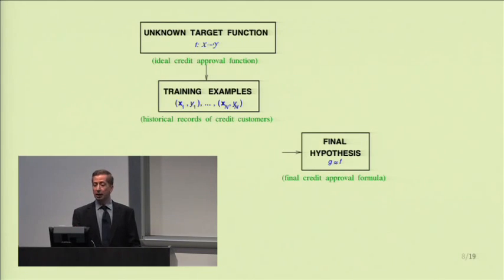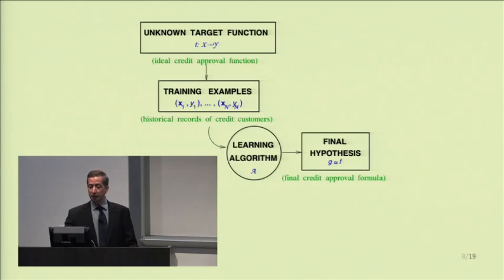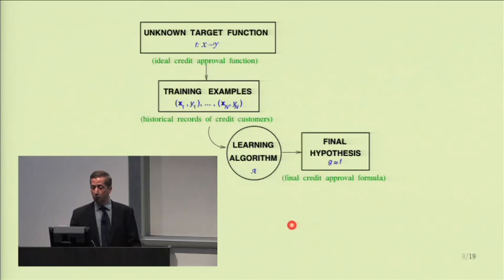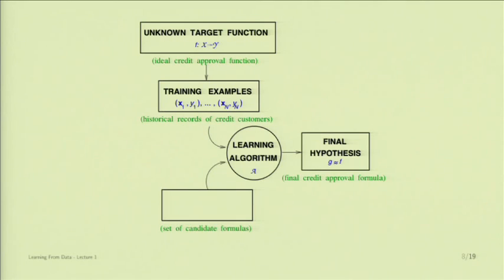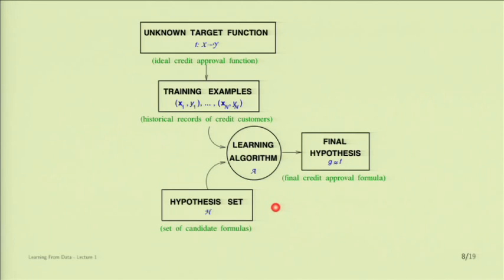What connects those two is the learning algorithm. The learning algorithm takes the examples and produces the final hypothesis, as we described in the movie rating example. There is another component: the hypothesis set — a preset model or set of candidate formulas. The learning algorithm creates the formula from this hypothesis set, which we call script H, and one of those candidates will be picked by the learning algorithm as the final hypothesis G, hopefully approximating F. This part of the chain — from target function to training examples to learning algorithm to final hypothesis — is very natural and nobody will object to it.